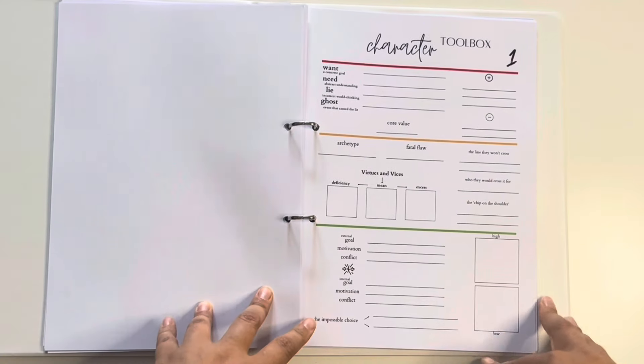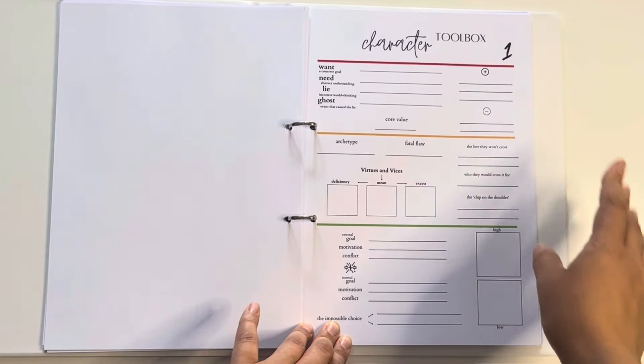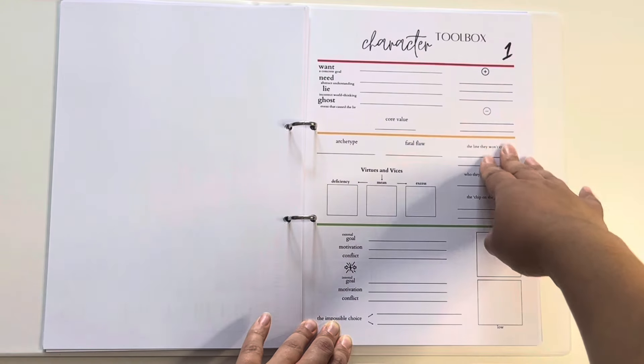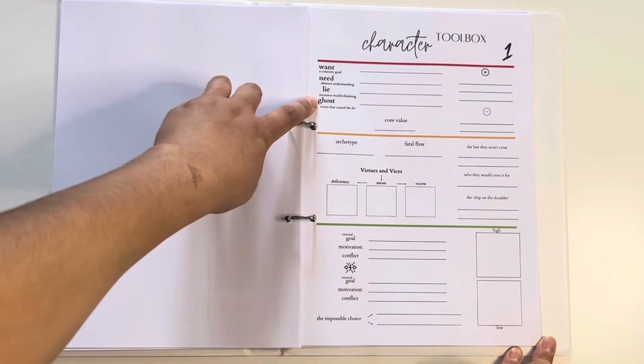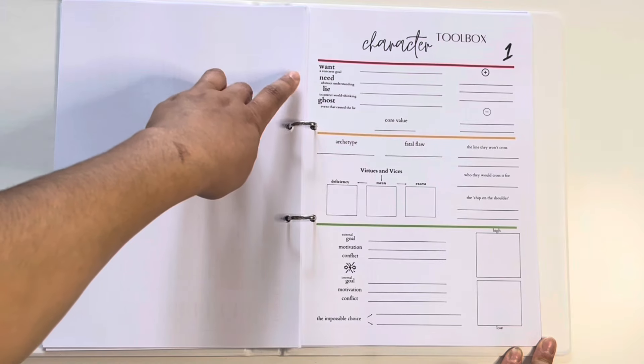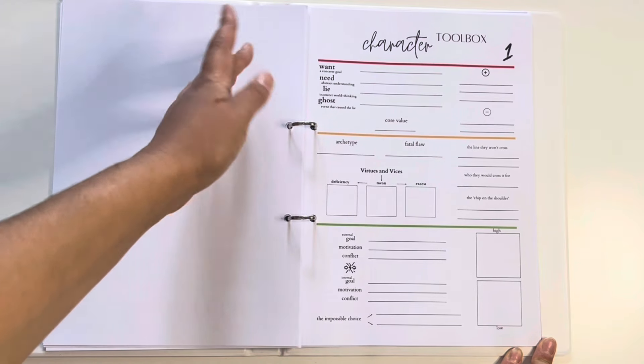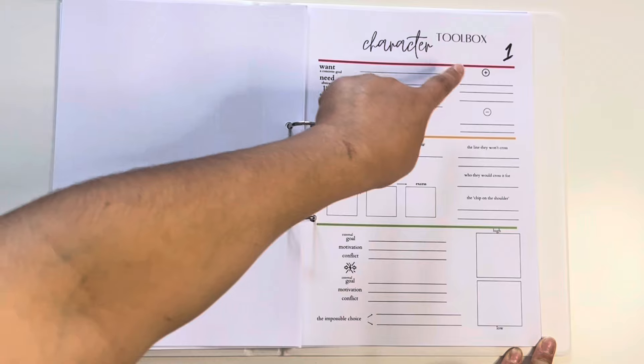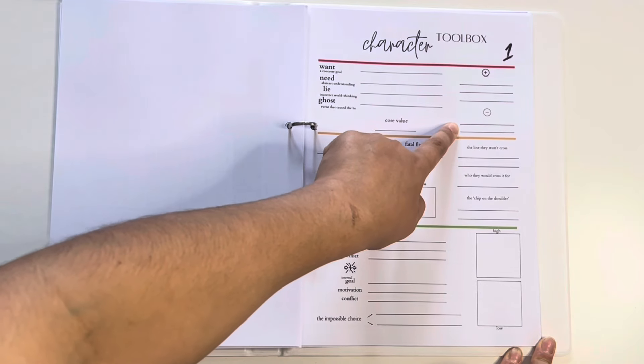We've got my character toolbox in here as well. Again, the red, orange, and green. These are the basics that I'm going to need in order to create my characters, which is their want, their need, their lie, their ghost, their core value. I haven't written it, but three positive traits and two negative traits.